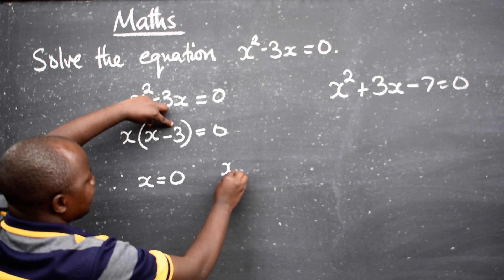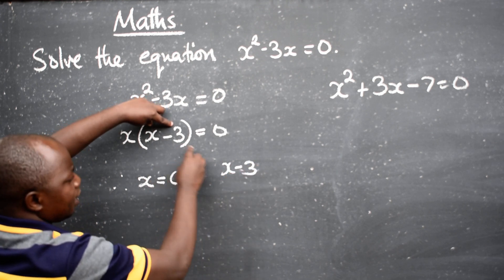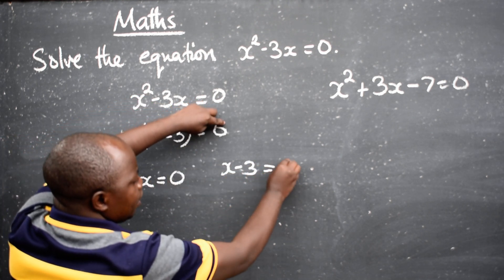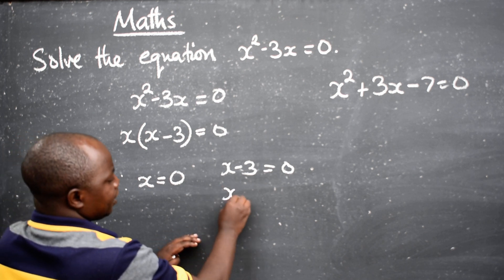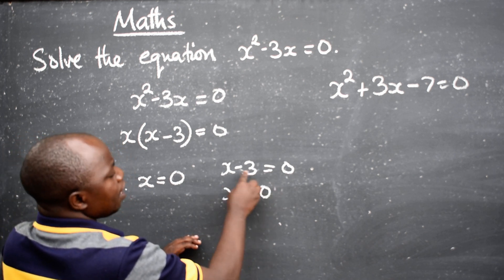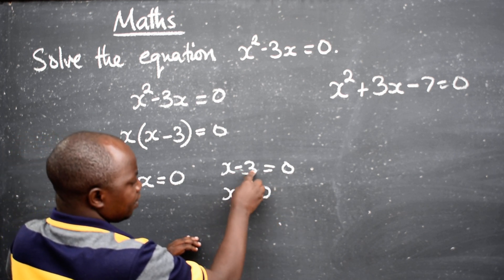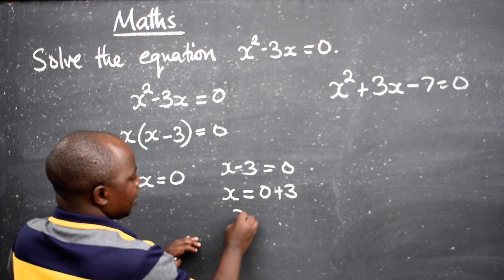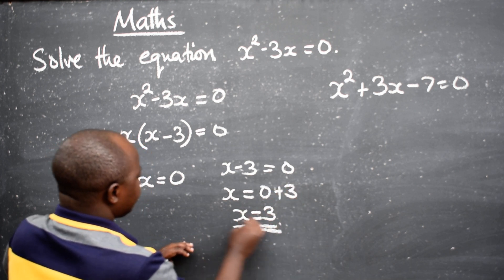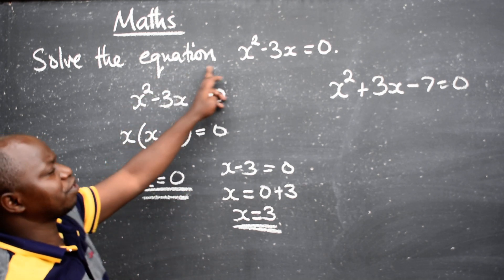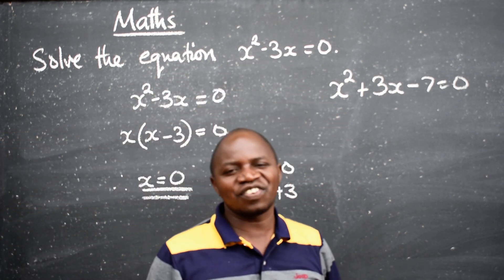The second one will be x minus three inside here. Equate to zero. And this will give us x is equal to zero. And this negative three will be positive three. And x will be equal to three. So these are the two values of this quadratic equation.